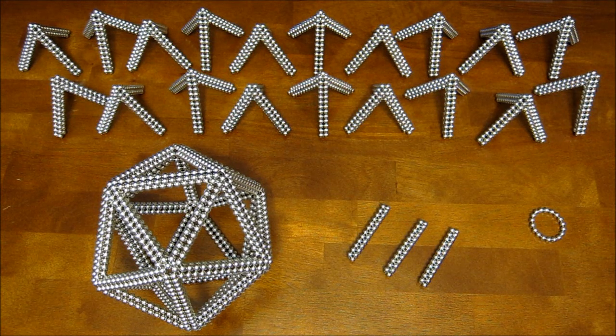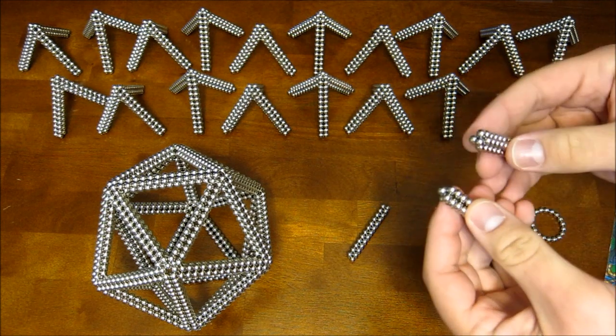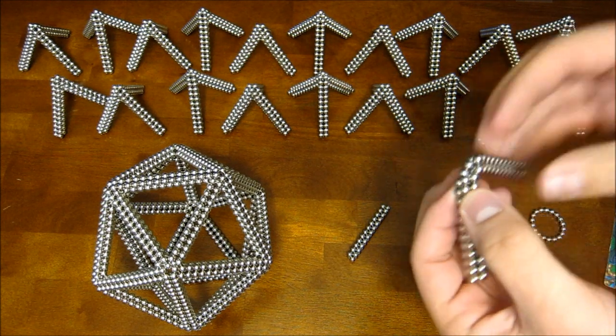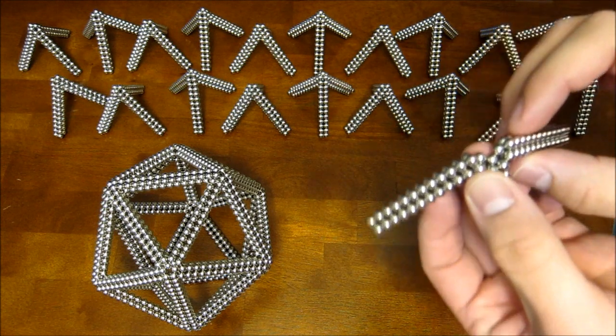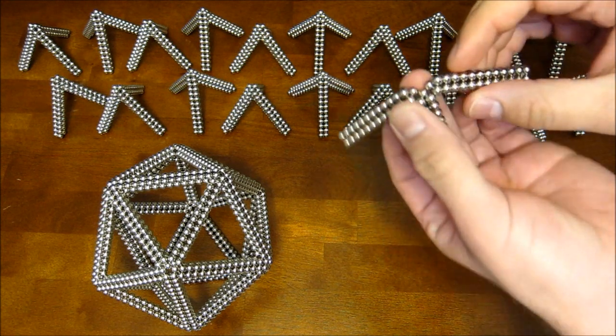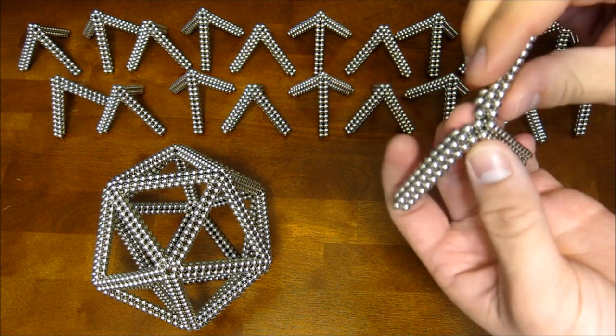So anyway, so you have these three and you're going to want to attach them together just like you did when you're beginning the icosahedron. So this time, when you get three of them, you're going to want to bend them around further.